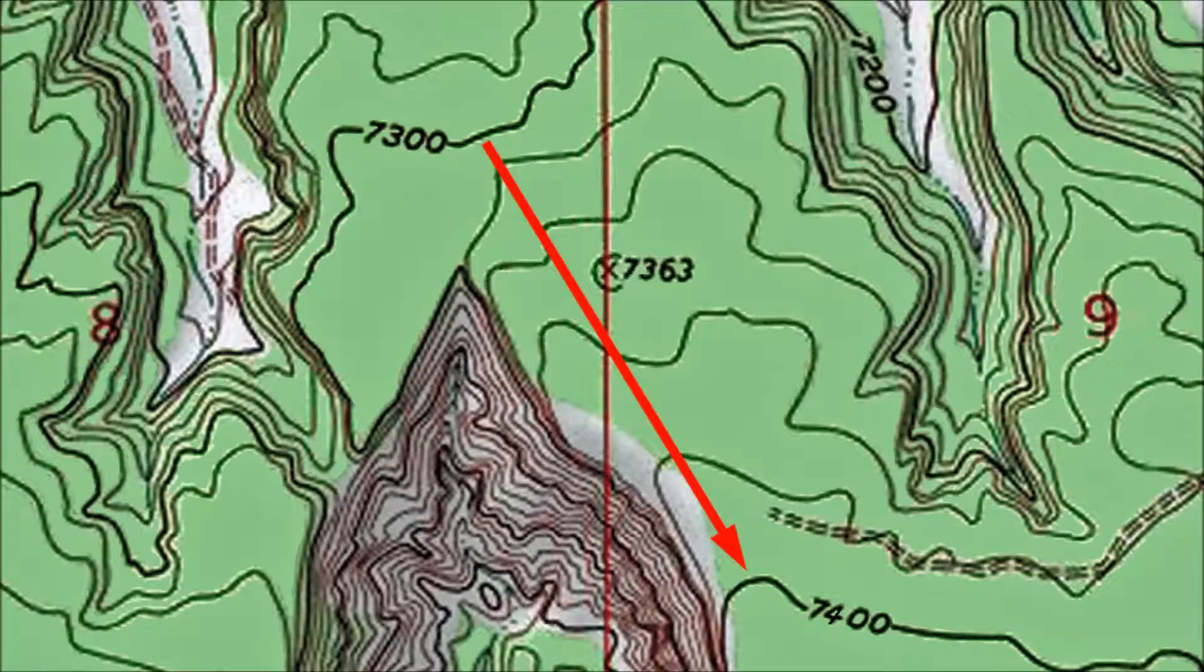If you travel the path shown by this red arrow, you're starting at an elevation of 7,300 feet and ending up at 7,400 feet for a vertical gain of 100 feet.